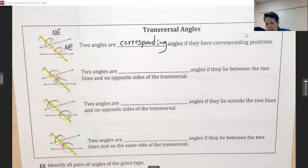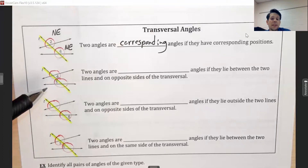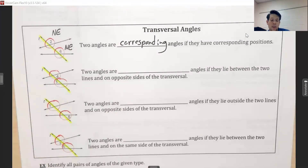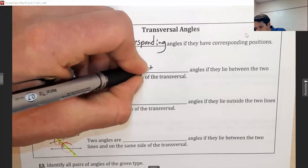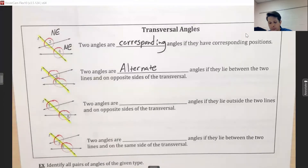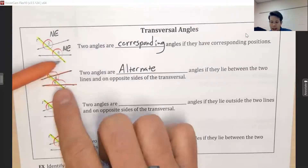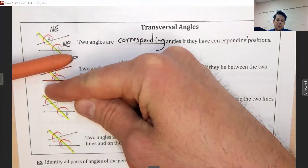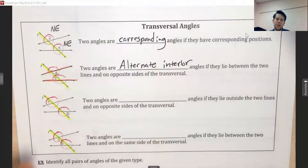Angles four and five are different — they do not correspond. Angle four is in the lower right, southeast, while angle five is in the upper left, northwest. Those positions are opposites. Instead of the word 'opposite' we use the fancy word 'alternate.' Additionally, angles four and five are nestled between the two intersected lines, so we call them interior angles. Together: they are alternate interior angles.